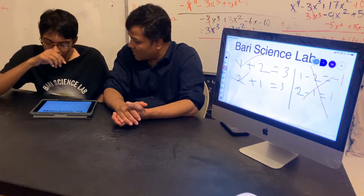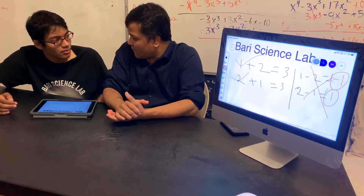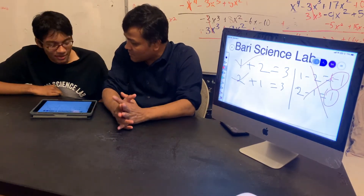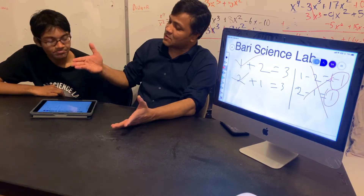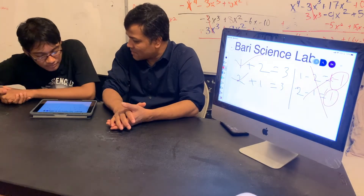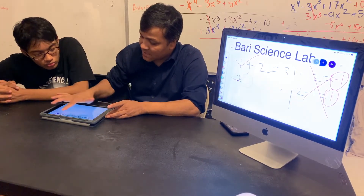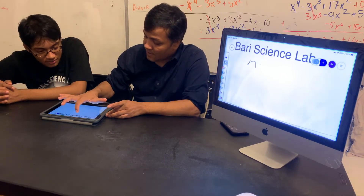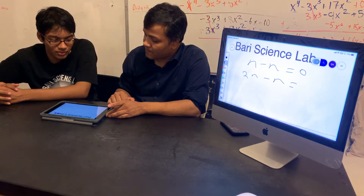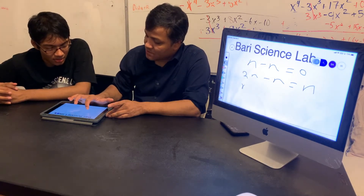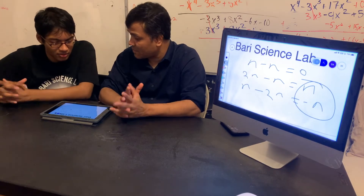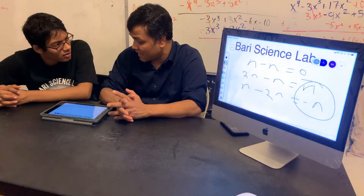Subtraction is not a commutative property. You don't have to feel bad for subtraction — it doesn't satisfy the commutative property, but that doesn't make it evil. N minus N is zero — anything minus itself is zero. Two N minus N is N. N minus two N — you flip them — is negative N. They are not the same, so it's not a commutative property.